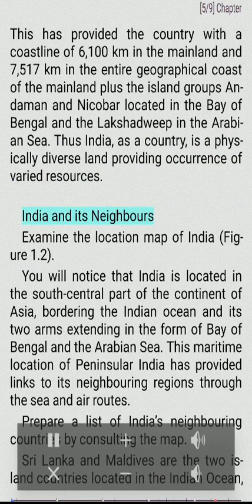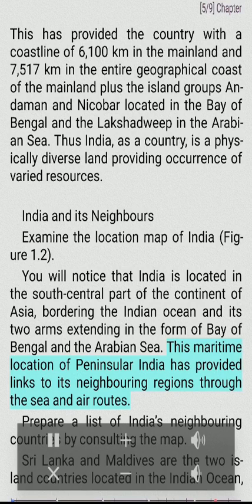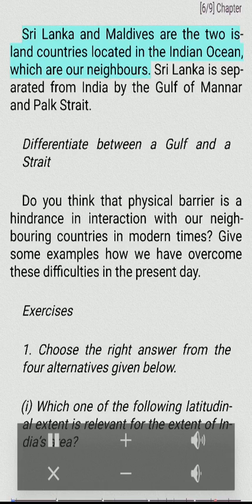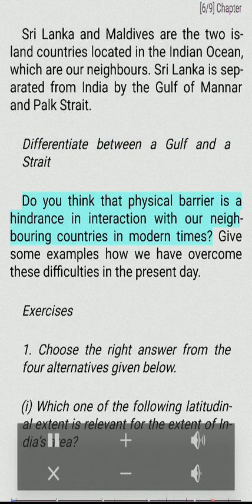India and its neighbors: Examine the location map of India, figure 1.2. You will notice that India is located in the south-central part of the continent of Asia, bordering the Indian Ocean and its two arms extending in the form of the Bay of Bengal and the Arabian Sea. This maritime location of peninsular India has provided links to neighboring regions through sea and air routes. Prepare a list of India's neighboring countries by consulting the map. Sri Lanka and Maldives are the two island countries located in the Indian Ocean which are our neighbors. Sri Lanka is separated from India by the Gulf of Mannar and Palk Strait. Do you think that physical barriers are a hindrance in interaction with our neighboring countries in modern times? Give some examples of how we have overcome these difficulties in the present.